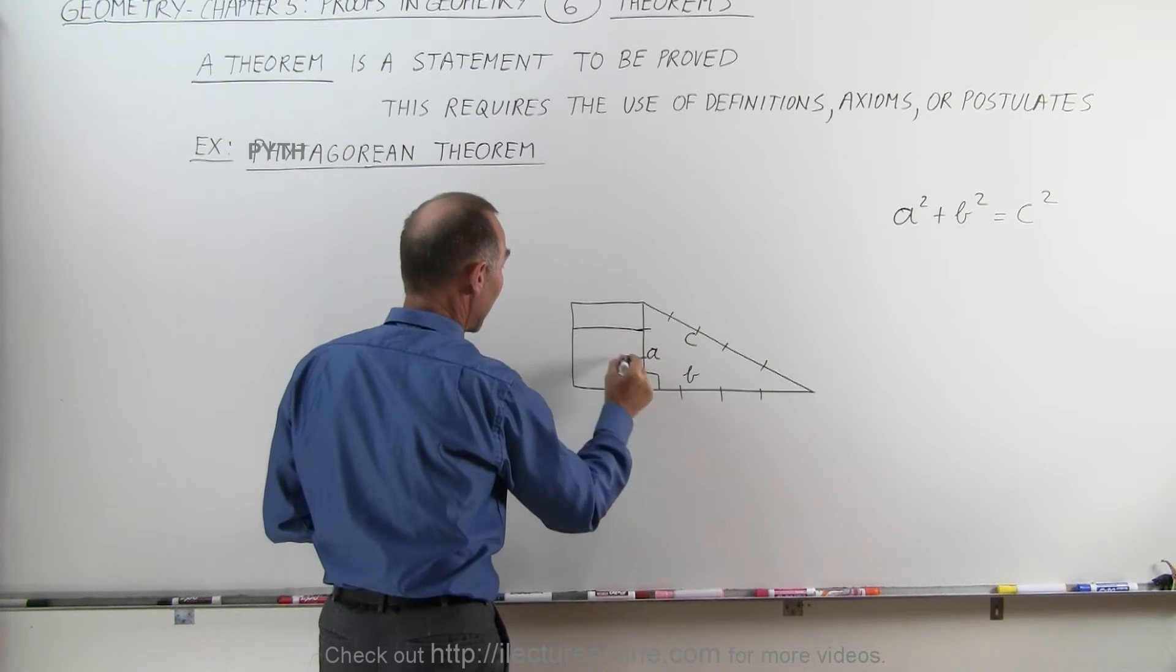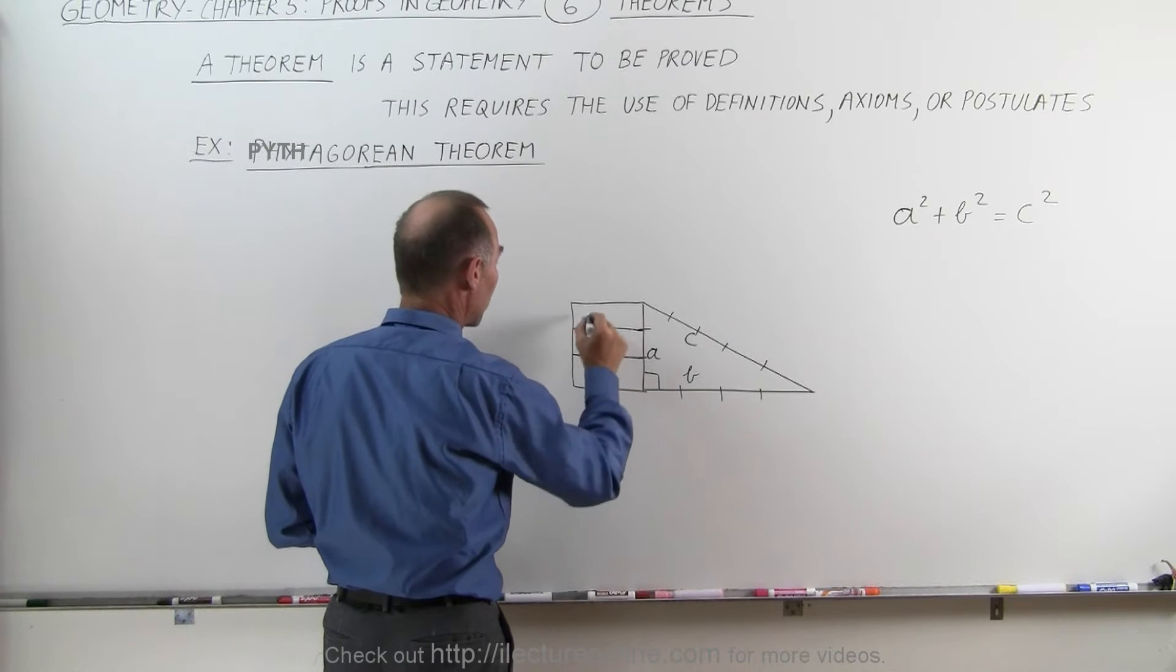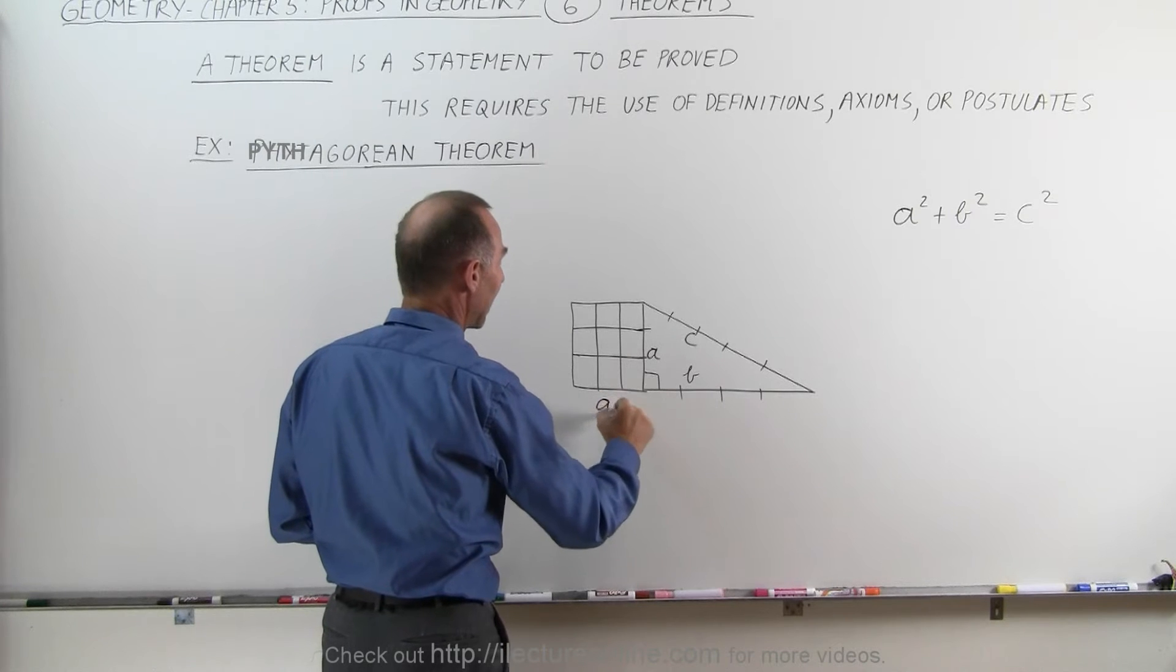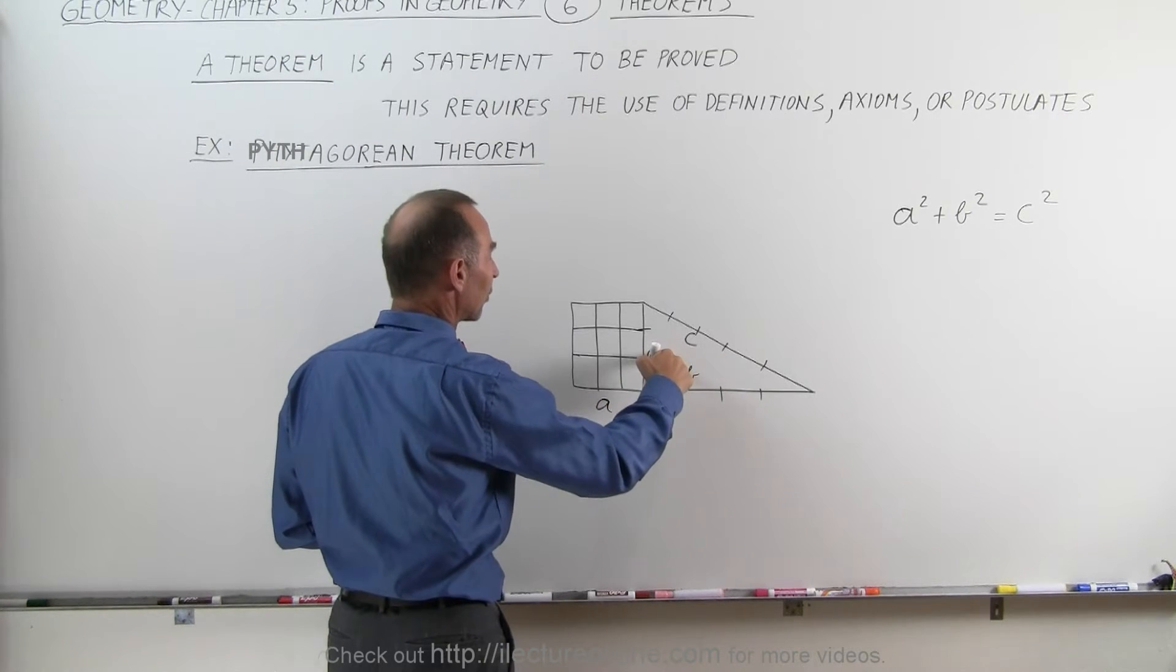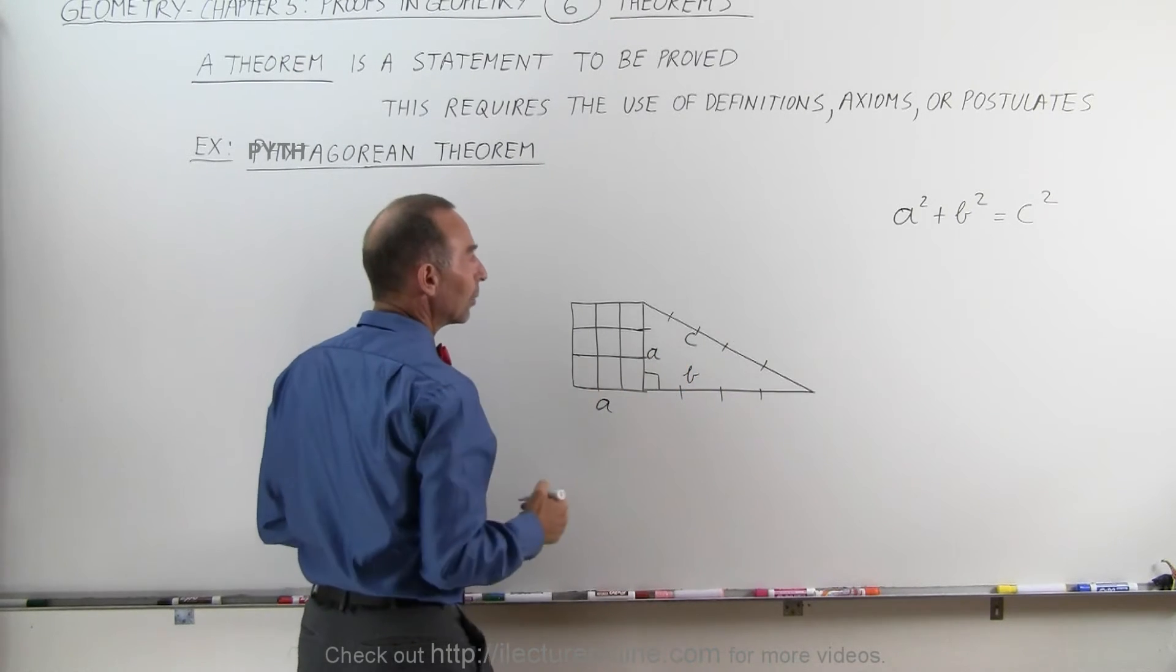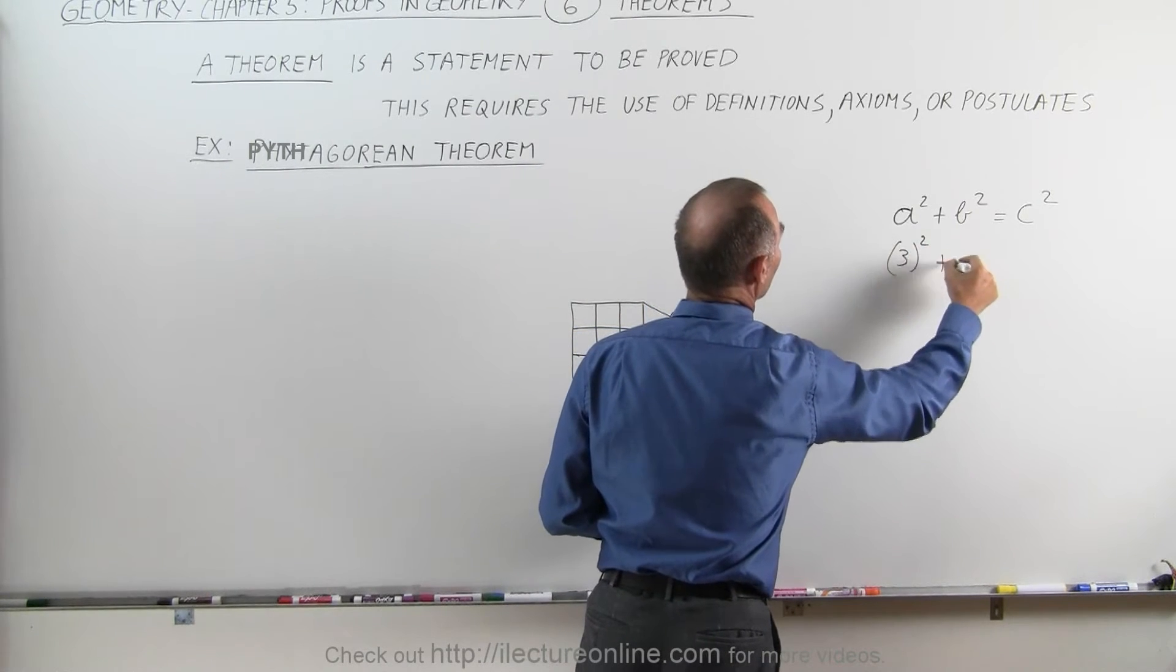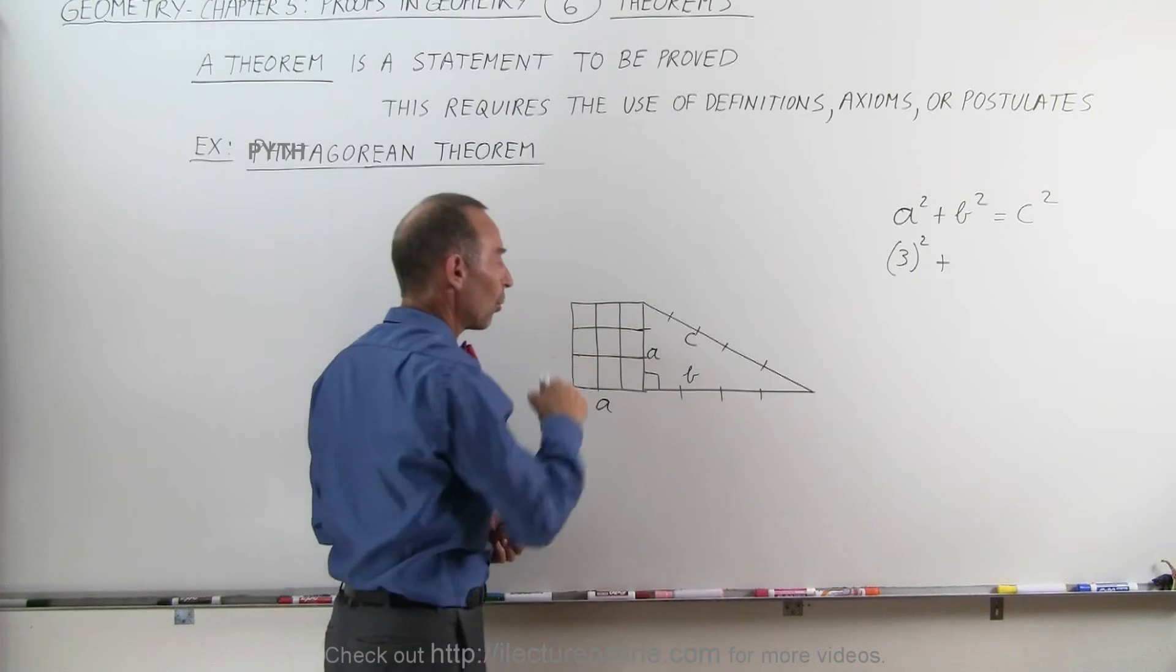And then if we add up all these squares that we would get, when we equally divide it out like that, you can see that A times A, if A is equal to three, then A times A would be equal to nine. So this would be three squared, and of course that would be nine, nine squares here.